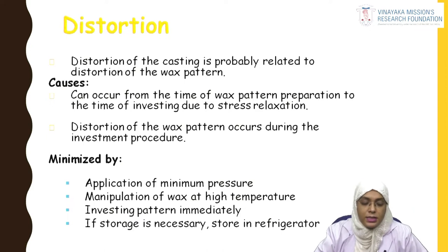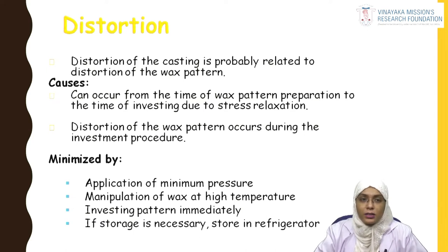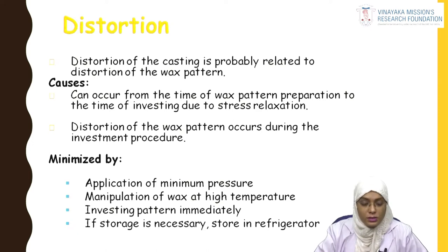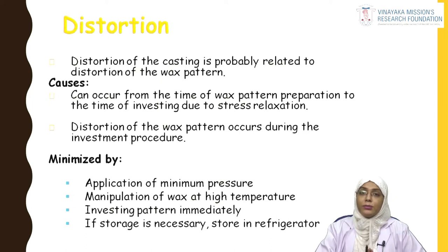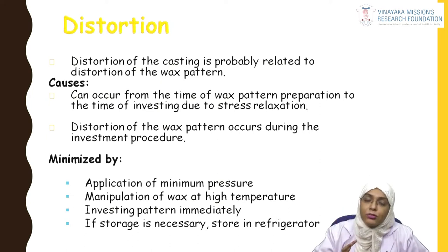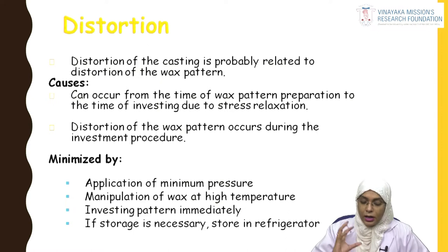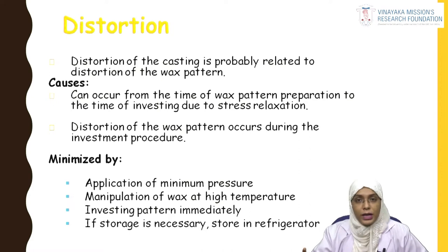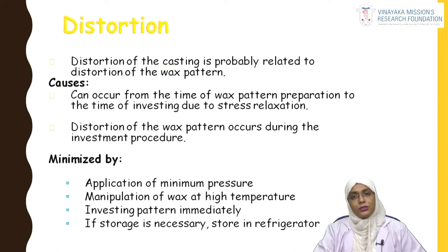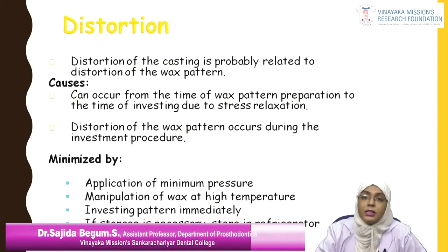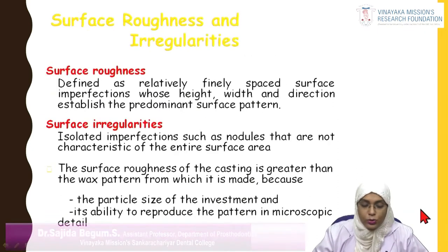The first defect is distortion. Distortion occurs when the wax pattern is distorted, leading to a distortion defect. To minimize it, be very careful in handling the wax pattern — apply minimum pressure, manipulate the wax at a high temperature, and invest the pattern as soon as it is made. If storage is necessary, store the wax pattern in the refrigerator.